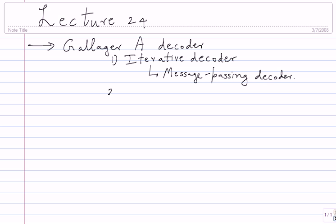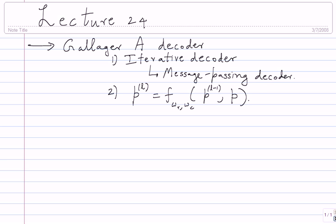This is an instance of message passing decoding, and it's iterative. Then we saw some analysis — the entire analysis was hinged on this recursion. We were able to develop this recursion, which is the probability of an erroneous message from bit to check at iteration L. A step like this is called density evolution.